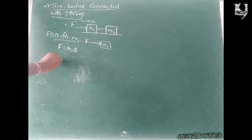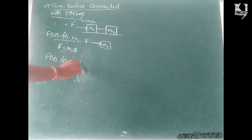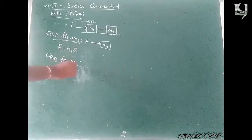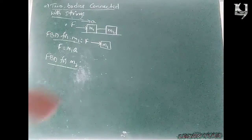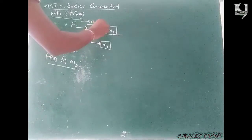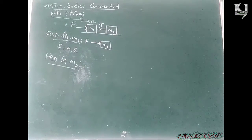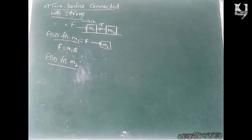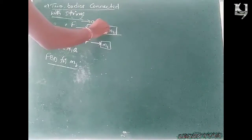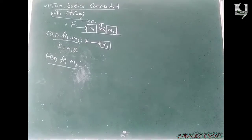Next, free body diagram for M2. Here, in between the two bodies there is a string, and the tension in the string is marked as T. In both directions, the only thing acting is the tension force T.